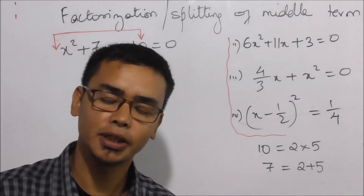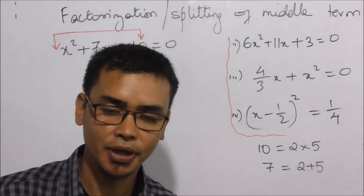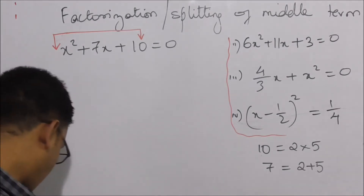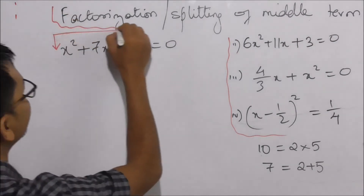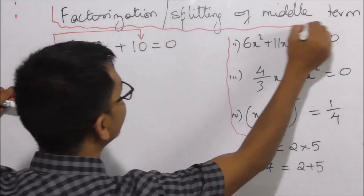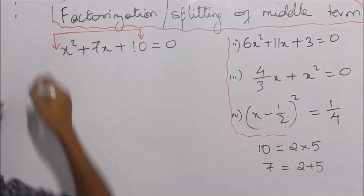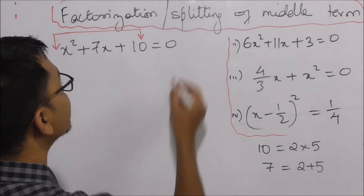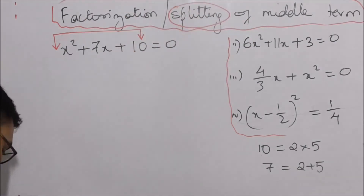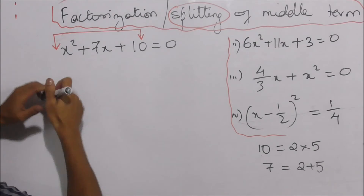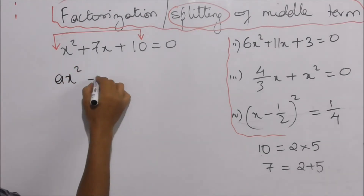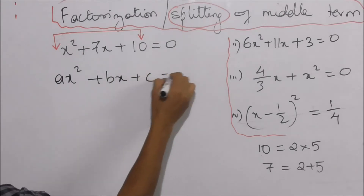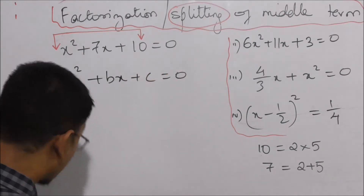Hello everyone, my name is Shai Panae Daudi Mkhandrao. This is for the 8th, 9th, and 10th class. This is factorization and splitting of middle terms. If you look at the middle term, you can see a quadratic equation Ax² plus Bx plus C is equal to zero.